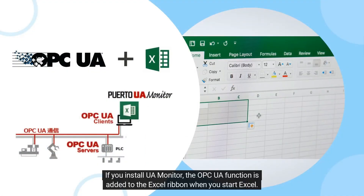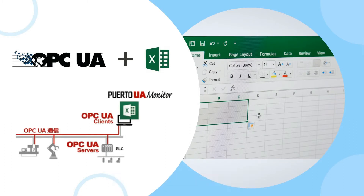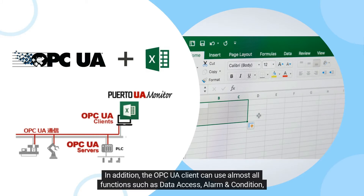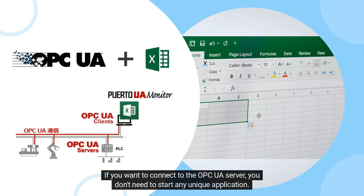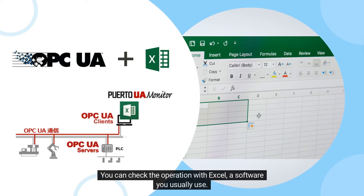If you install UA Monitor, the OPC UA function is added to the Excel ribbon when you start Excel. The OPC UA Client can use almost all functions such as data access, alarm and condition, historical data access, and call. If you want to connect to the OPC UA server, you don't need to start any unique application. You can check the operation with Excel, a software you usually use.